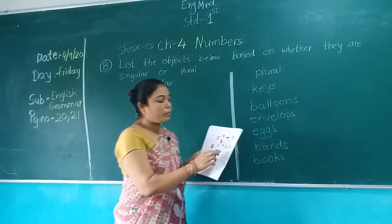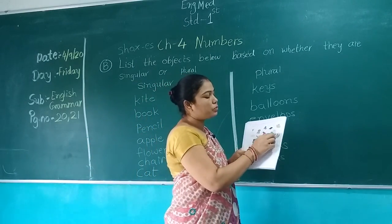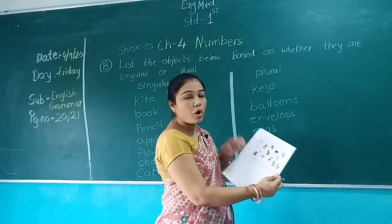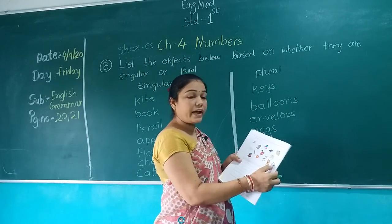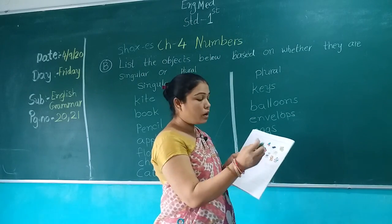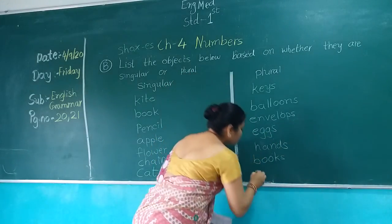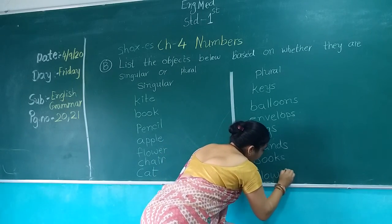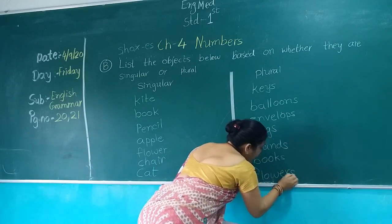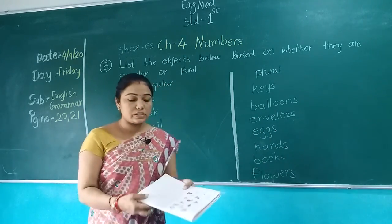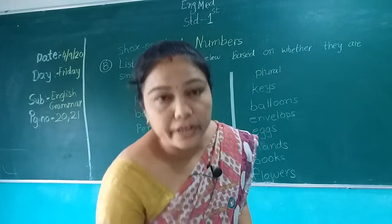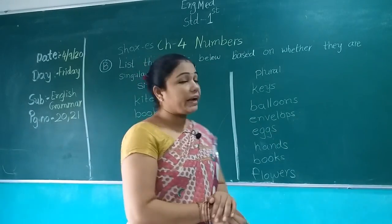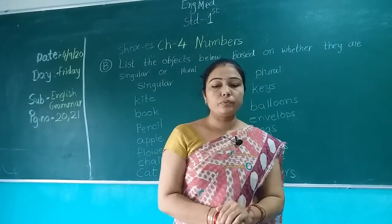How many flowers are here? 1, 2, 3, 4, 5 — more than one. So we write in the plural form: F-L-O-W-E-R-S, Flowers. Students, today we have completed our chapter number 4. Keep practicing at home. Thank you.